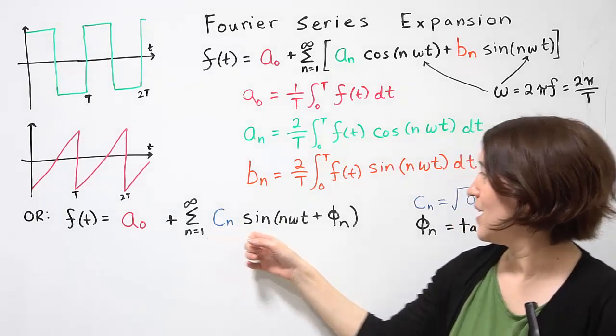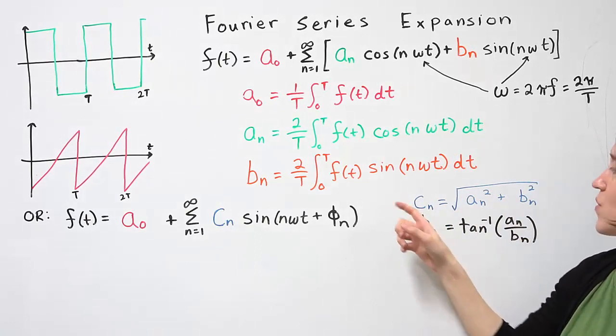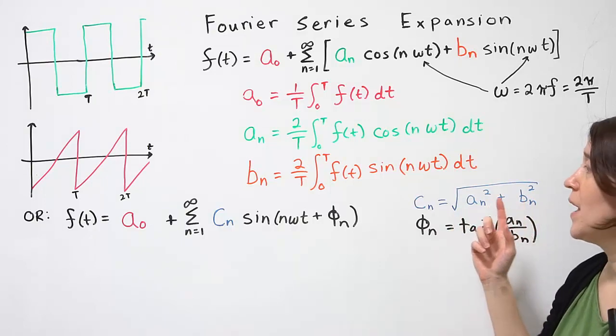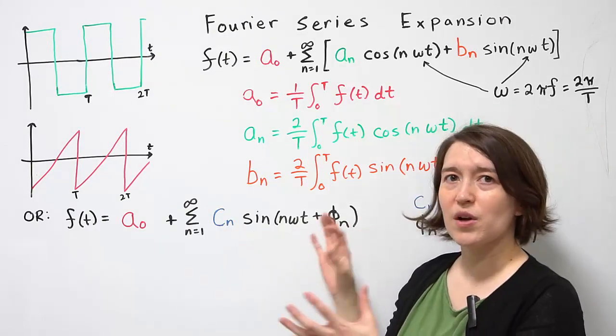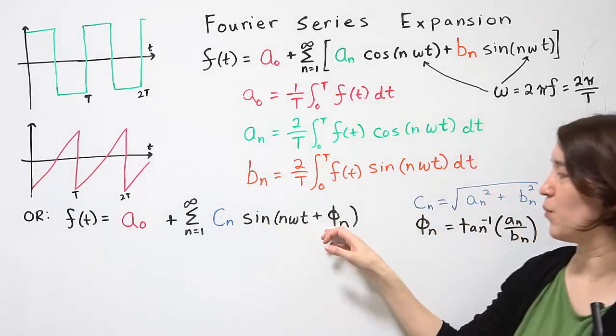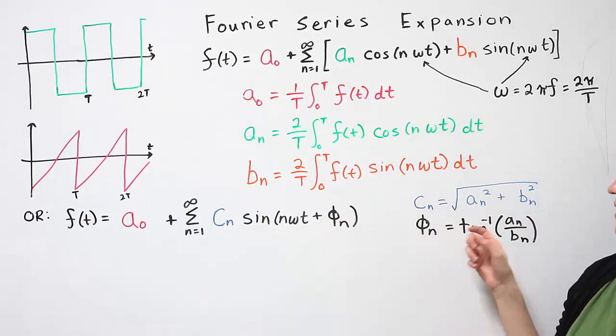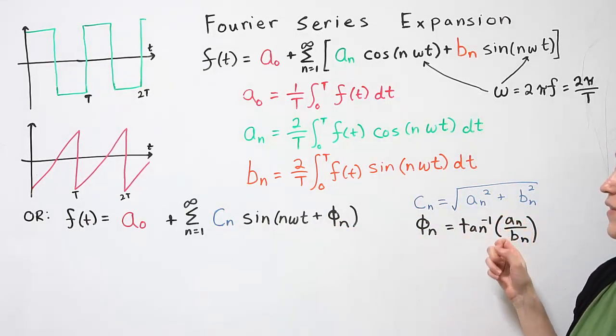So cₙ now becomes this value. So cₙ is defined as the square root of aₙ squared plus bₙ squared. And because we're combining the two together, we actually end up with a phase shift. So φₙ here can be defined as the inverse tangent of aₙ divided by bₙ.